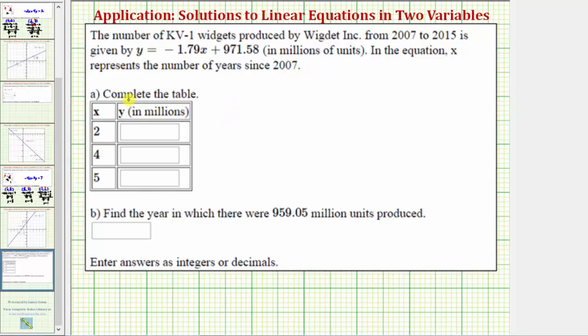So we're asked to complete the table. Notice how we're given different x values. We need to find the corresponding y values. To do this, we'll substitute these x values into the given equation. So for the first row, x equals two, and therefore the corresponding y value is equal to negative 1.79 times x, which is two, plus 971.58.